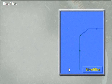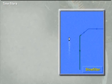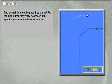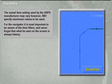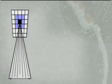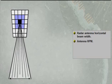Different filtering techniques are used by different manufacturers. For the purpose of understanding, consider a system using two filters: the active filter during steady course, called the steady course filter, and the filter used during manoeuvring, called the manoeuvring filter. The actual time settings used by the ARPA manufacturer may vary; however, IMO specifies maximum values to be used. For the navigator, it is most important to be aware of these time filters and never forget that what is seen on the screen is always history.